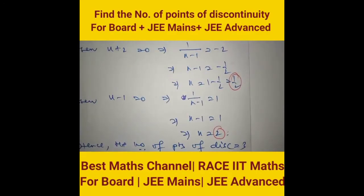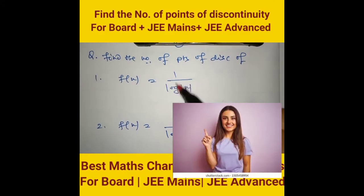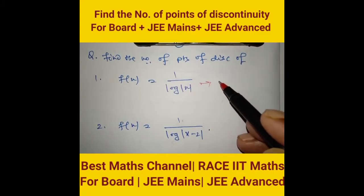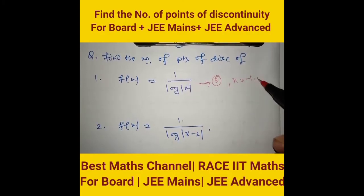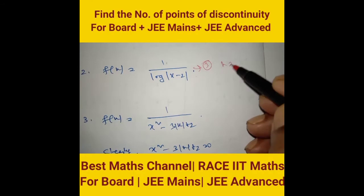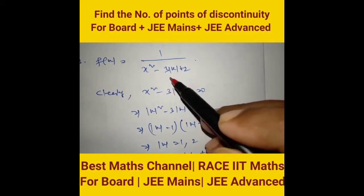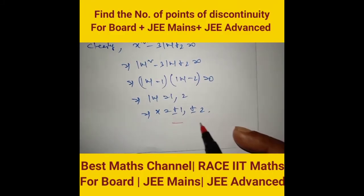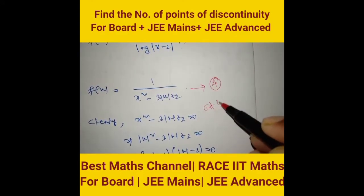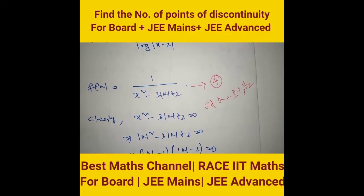Practice makes perfect. Find the number of points of discontinuity of f(x): wherever the function is not defined, it is discontinuous. Number of points of discontinuity is 3 at x = −1, 0, and 1. For another function, it is also 3 at x = 1, 2, and 3. For f(x) = cos function with denominator zero at x = ±a and ±2, number of discontinuity points is 4 at x = ±1 and ±2.